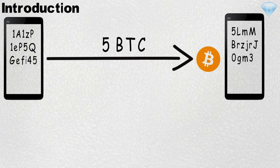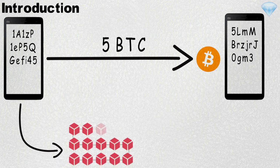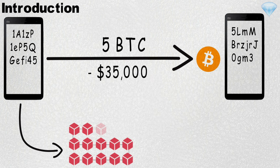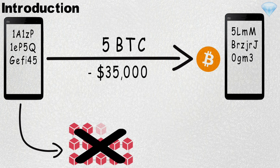Of course, anyone can create a transaction that looks like that. So, if it was added to the blockchain as is, without any issues, then you would be out of $35,000, whether you like it or not. Luckily, such a transaction does not belong to the blockchain, because it is missing a valid digital signature.